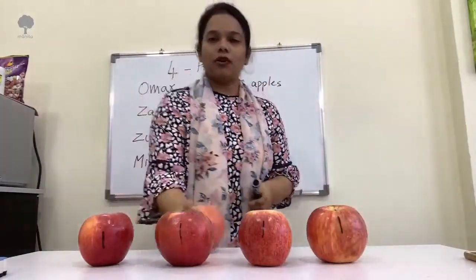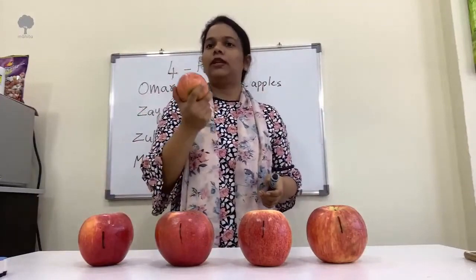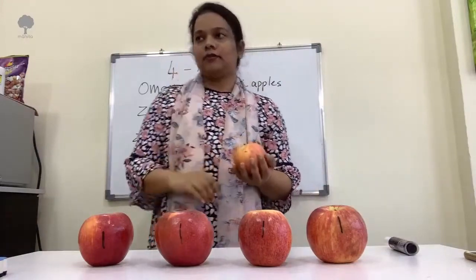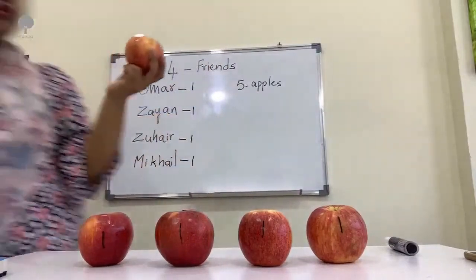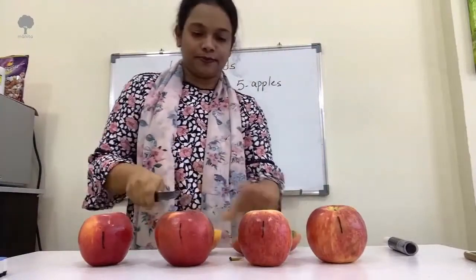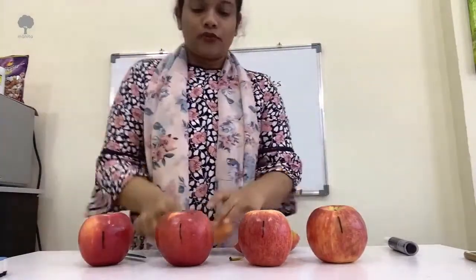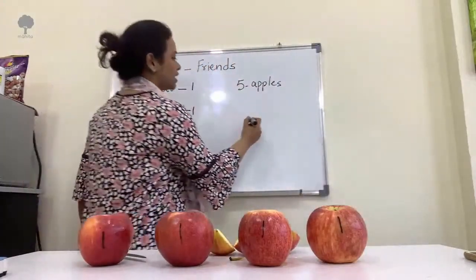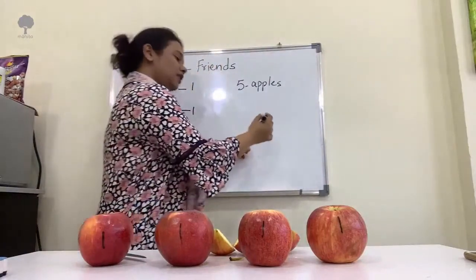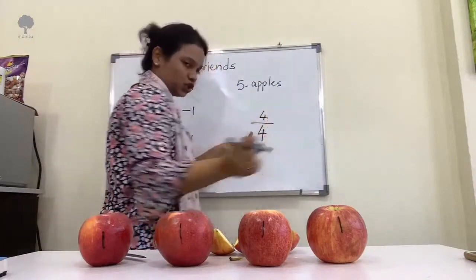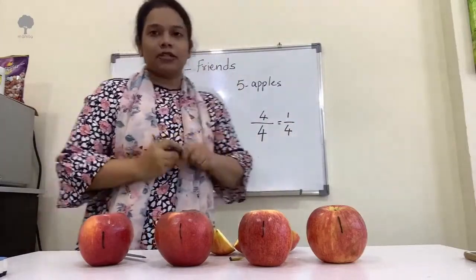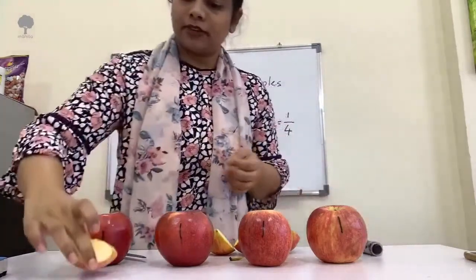Everyone got one whole, but they still want this remaining one also equally distributed. So what can we do? We can cut this one into four parts — four members. Let me cut this one into four equal parts. Four equal parts — so the fraction is four by four. But each one will get one-fourth. So let me put this one-fourth apple for Omar.